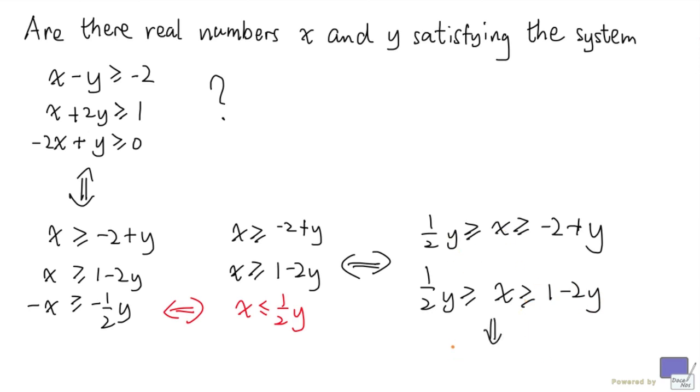So this means that one half y has to be at least minus 2 plus y, and one half y has to be at least 1 minus 2y. And it's clear that if you have x and y satisfy these two inequalities, they will also satisfy the original inequalities.